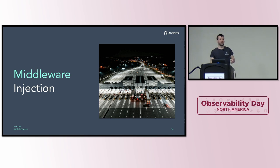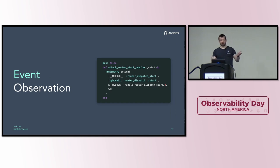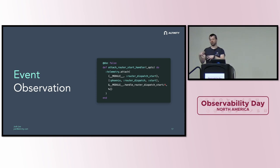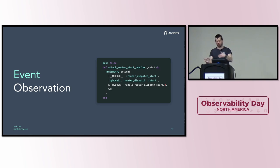We also have middleware injection — you know what middleware looks like in your language of choice, and you can inject middleware to get telemetry out. If middleware injection is an option, it's usually a great option for auto-instrumentation. Then there's event observation. Elixir has this library called Telemetry — which predates the OpenTelemetry project, and the naming is really annoying — used in Phoenix. All these events and metrics are already being emitted by Phoenix, so to auto-instrument it, you just subscribe to those events and export telemetry based on them.